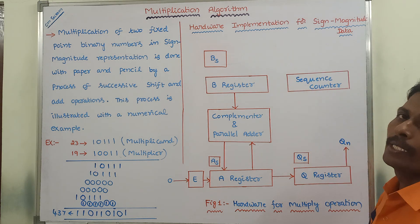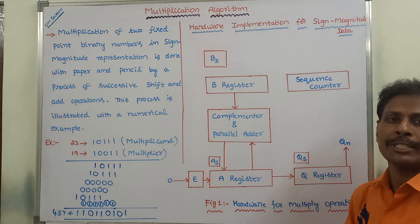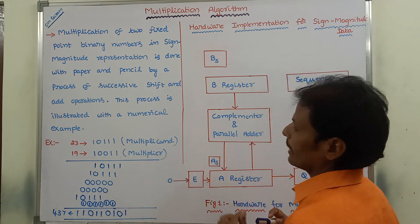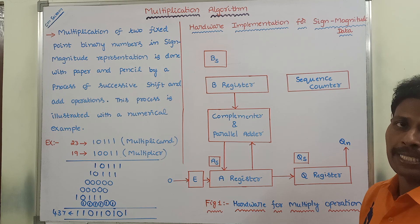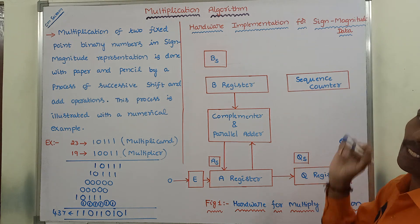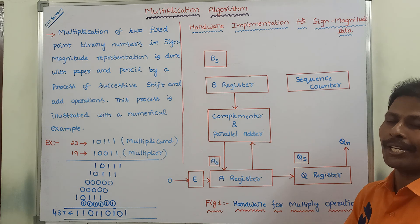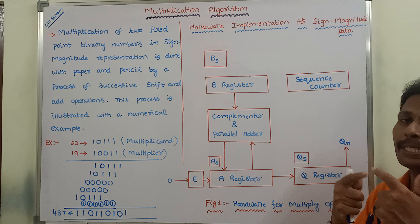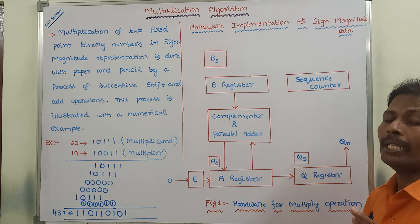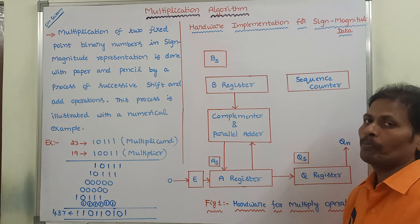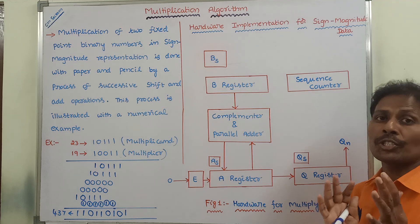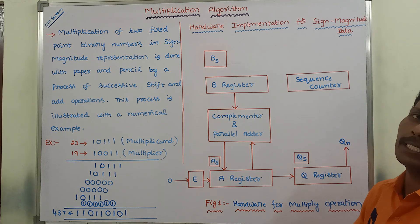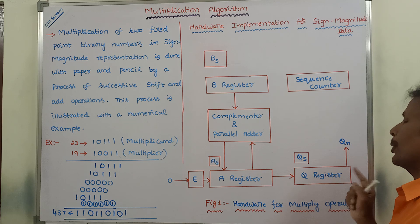The sequence counter is initialized with the number of bits in the multiplier. That number of bits is stored in the sequence counter. The sequence counter is decremented by one whenever any partial product is generated. When the sequence counter reaches zero, we have to stop the process, and the final result is stored in the accumulator and Q register.